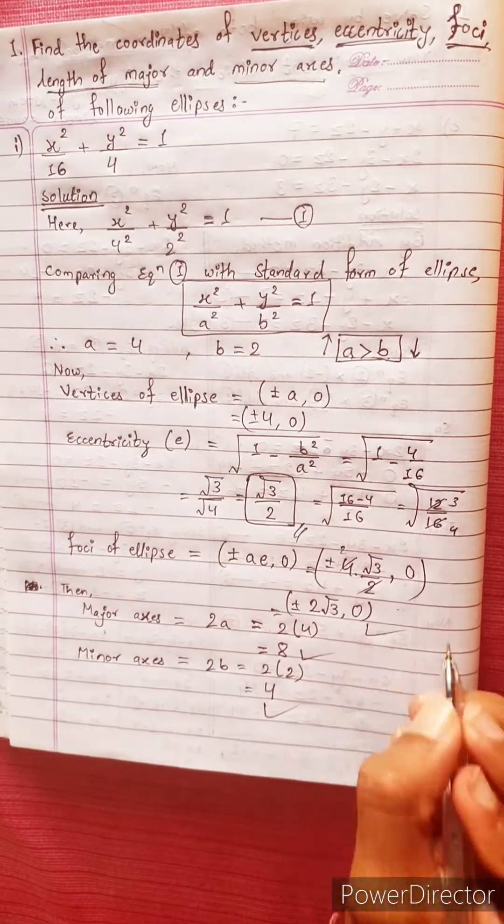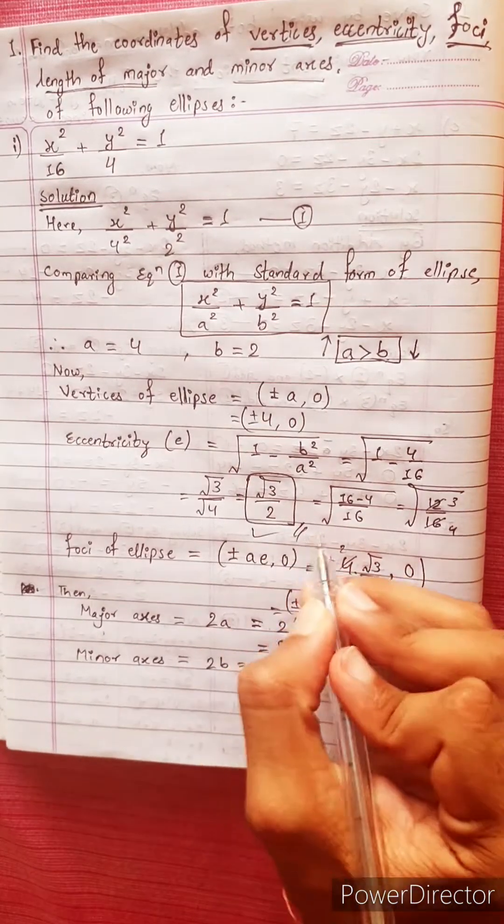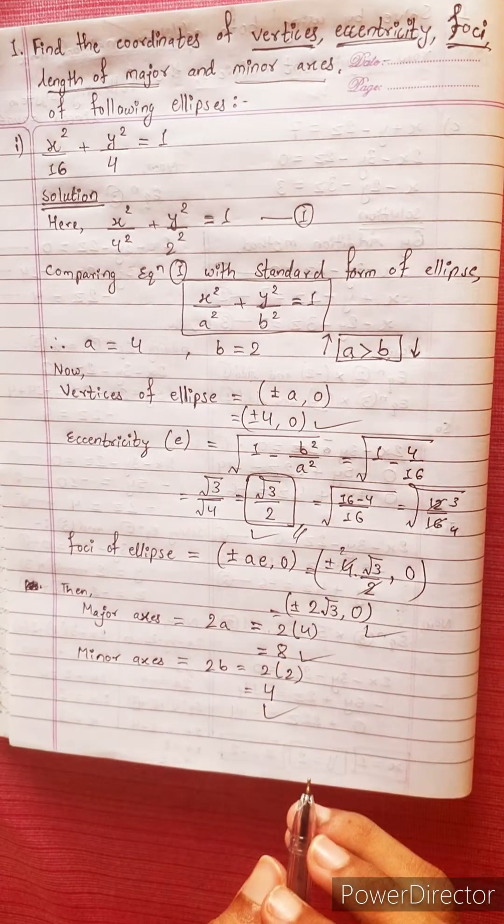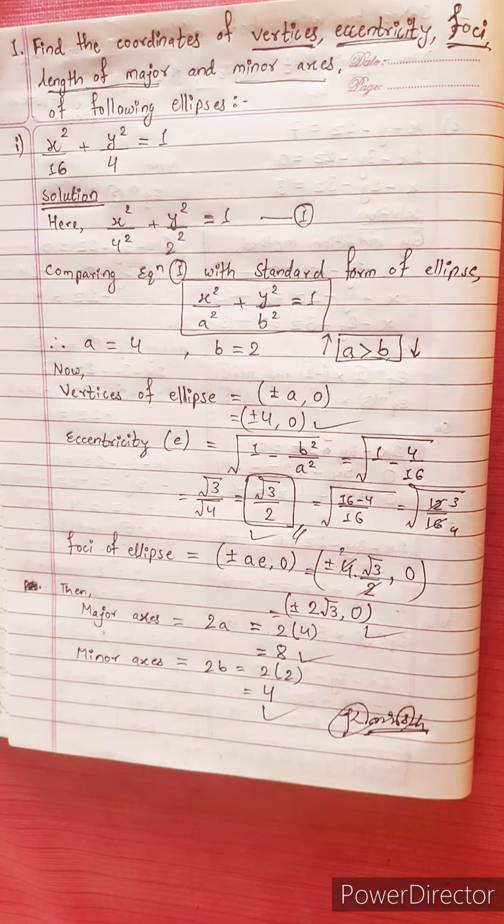The answers are: 4, 8, plus minus 2 root 3, 0, root 3 by 2, and plus minus 4, 0. Thank you, bye bye.